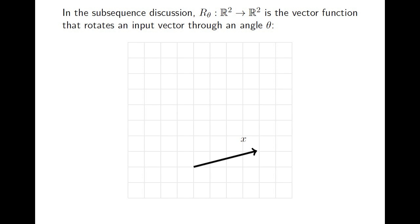We will limit ourselves to rotating vectors in two dimensions. Starting with the vector x, it is easy to visualize rotating that vector through an angle θ. We will denote the vector function that rotates a given vector through an angle θ as R_θ. Here, we depict the effect that this function has.